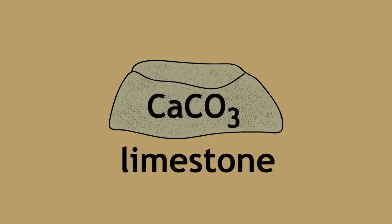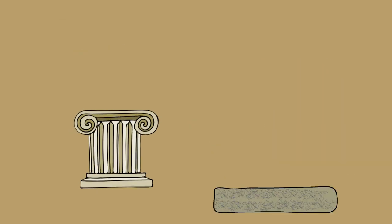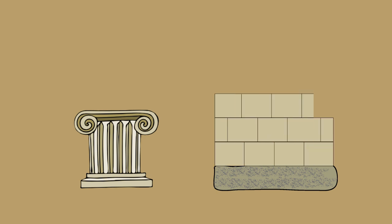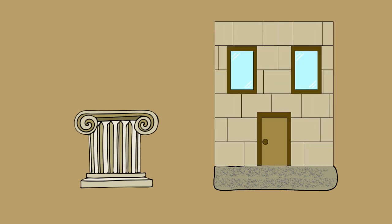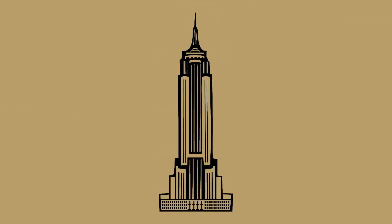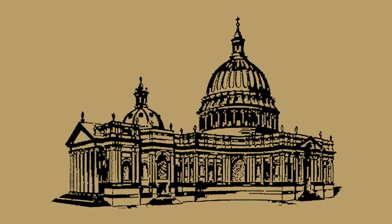Limestone can be used on its own. Many structures have been carved out of limestone, and many buildings have been built with mostly limestone. Some examples include the Empire State Building in New York, United States of America, and St. Paul's Cathedral and the Houses of Parliament in London, England.